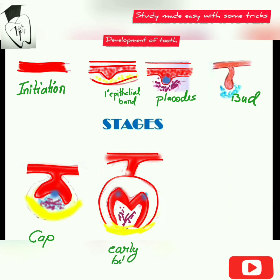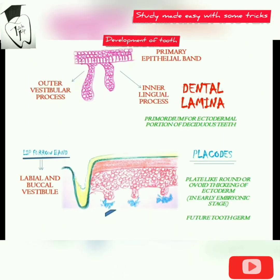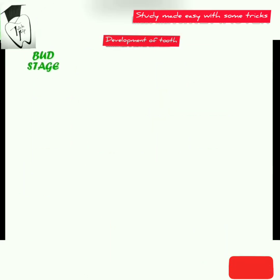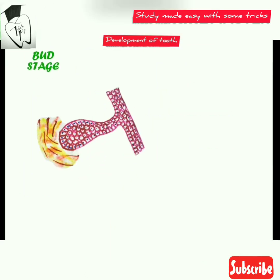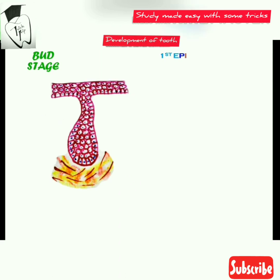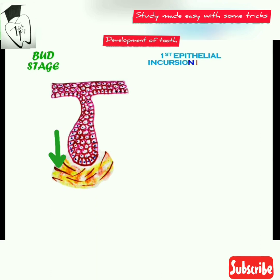We'll now proceed with the bud stage. It's the first epithelial incursion into the ectomesenchyme. There is little change in shape and function. As soon as the development of the germ is initiated, the cells continue to grow and proliferate, and they grow in a bud shape — this is the enamel organ.